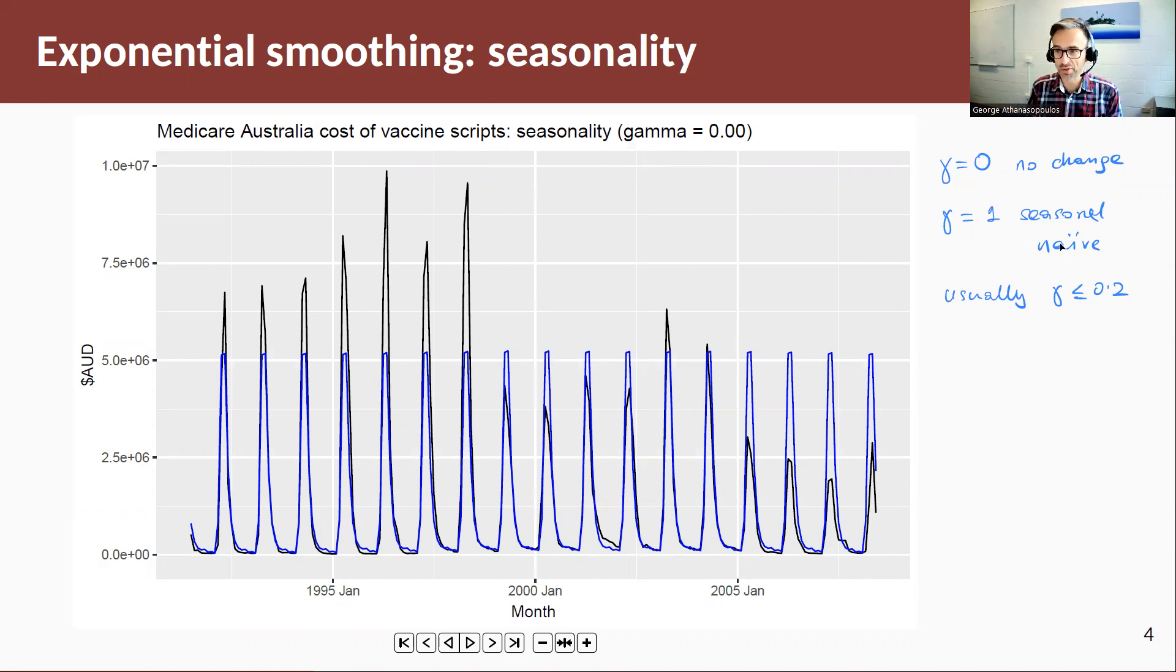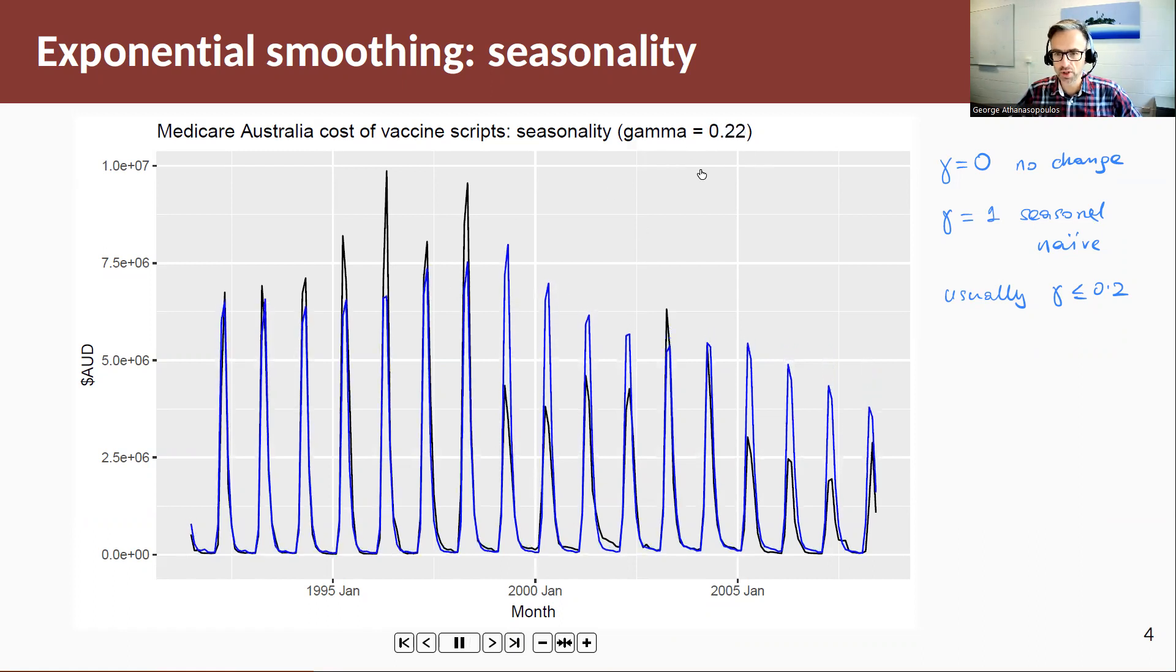When gamma is equal to 1, then we have seasonal naive. When gamma is close to being 1, we have close to seasonal naive. Usually we see a gamma quite low. So seasonal component doesn't change immensely. So usually below 0.2, but sometimes it might not be. So let's have a look at the effect of gamma increasing and the effect on the seasonal component.